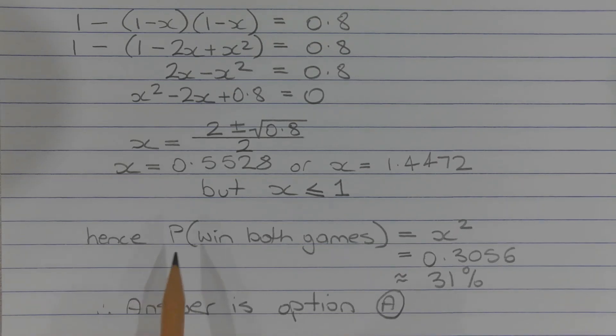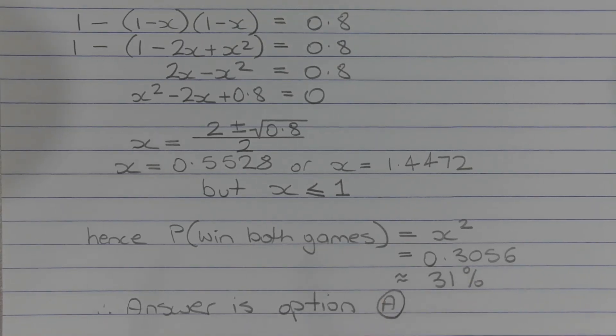Hence the probability of winning both games is equal to x times x, which is x squared. Taking 0.5528 and squaring it we get 0.3056, which is approximately 31%. Therefore the answer is option A.